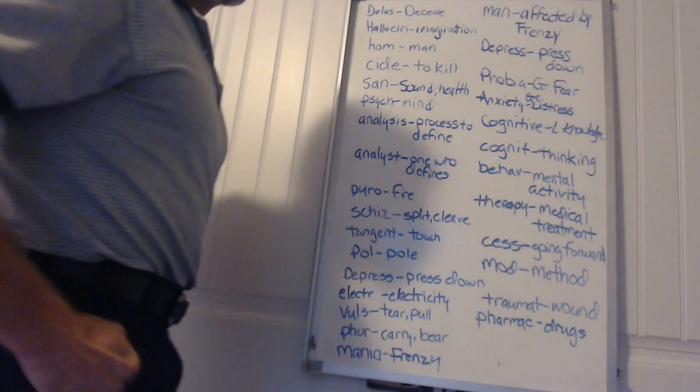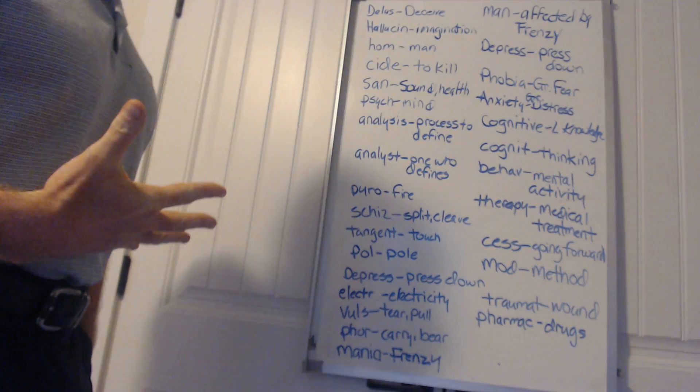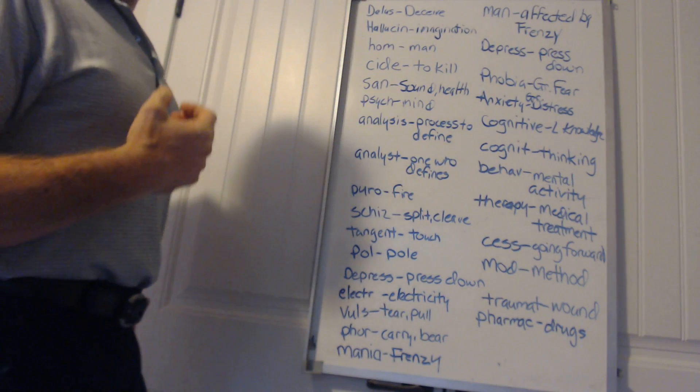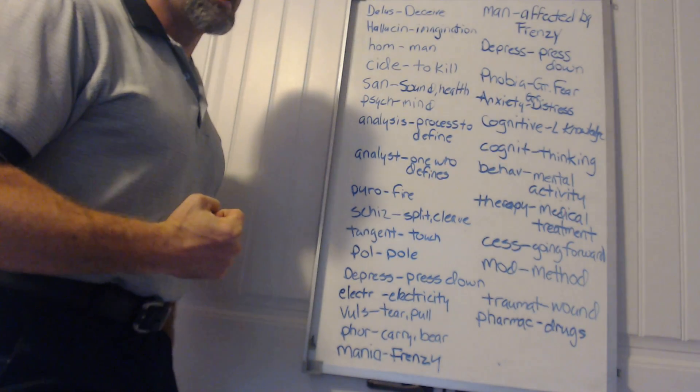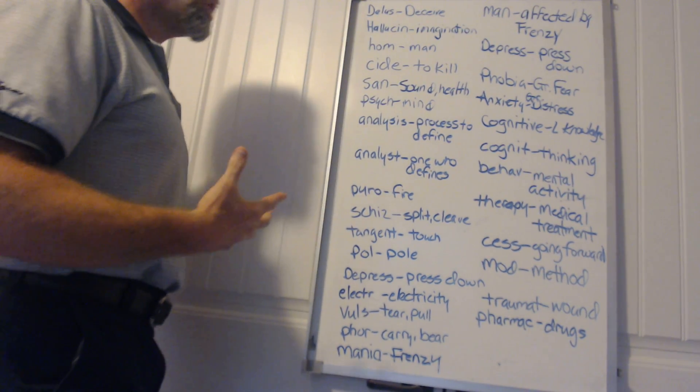For chapter 18 on mental health, I wanted to touch on some key combining forms and word roots that were really at the heart of the subject matter. Learning these combining forms and word roots are going to be key to being able to create medical terms associated with mental health.